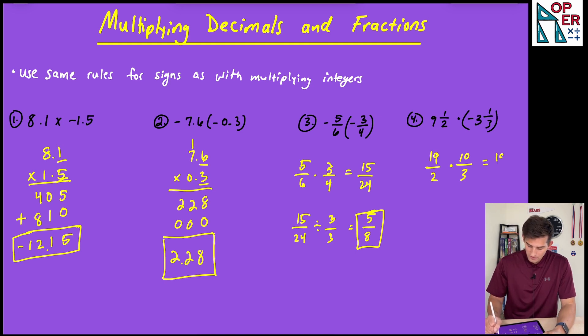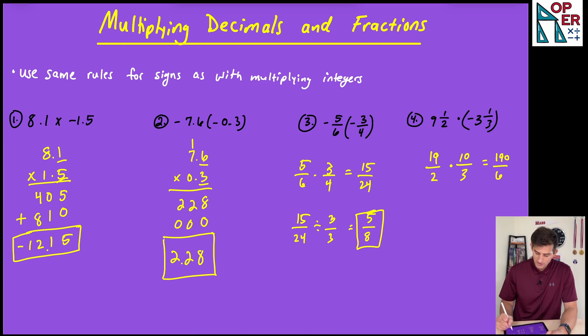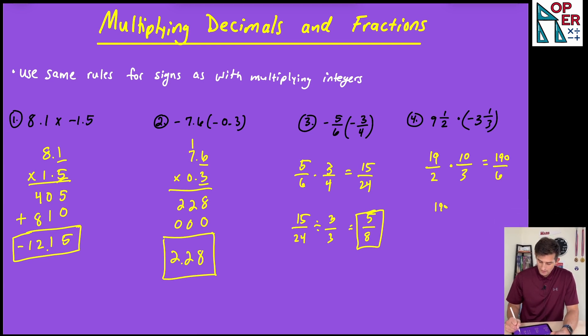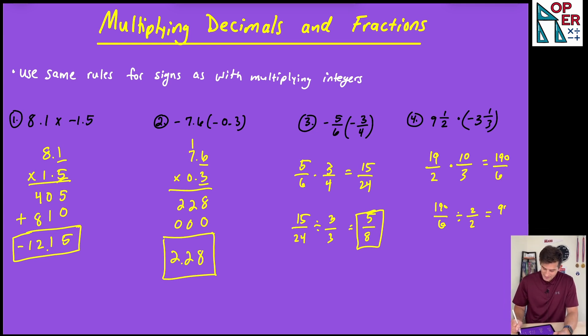Now we multiply, we get 190 over 6. And so now we can look at both of those and we know that both those are even numbers, so they should be divisible by 2. So 190 over 6 divided by 2 over 2, and that'll give us 95 over 3. And we said our answer should be negative. So negative 95 thirds for number 4. And that's how you can multiply decimals and fractions.